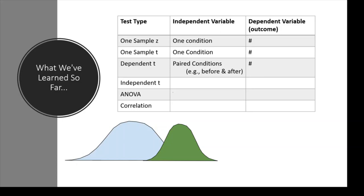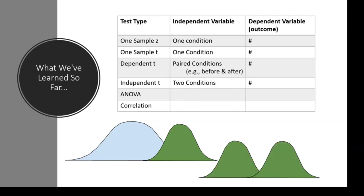Then we moved on to an independent t, where we had two conditions predicting a number outcome — for example, a placebo condition versus those who consumed my magic tea, comparing those two distributions. Then we moved on to ANOVA, which was three or more conditions predicting our number outcome: perhaps placebo, my magic tea group, and a magic coffee group — three distributions compared on the number outcome.